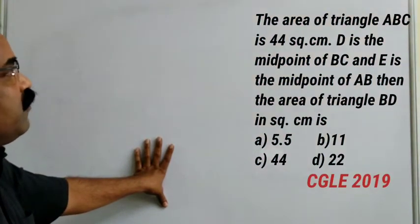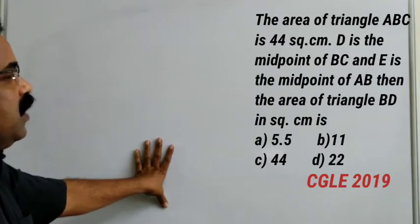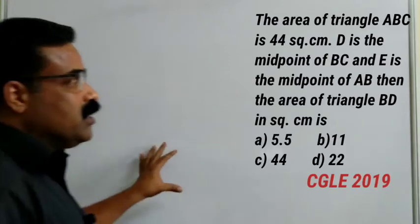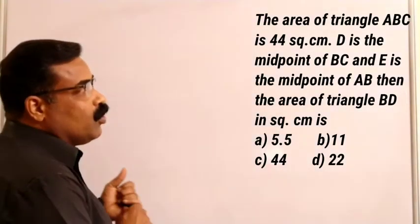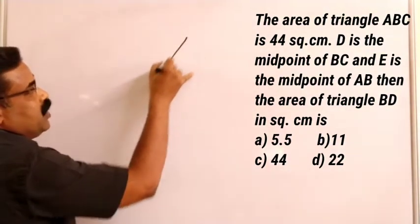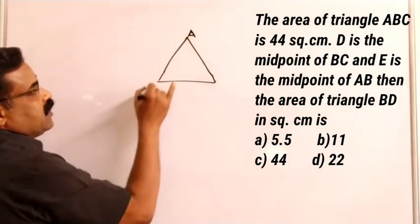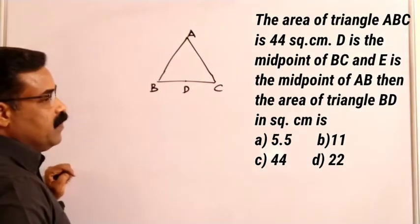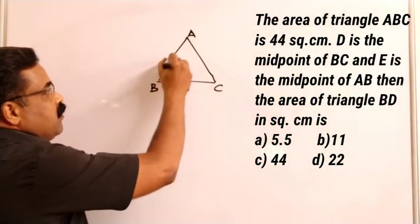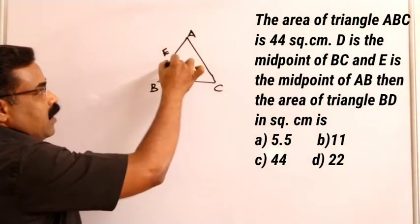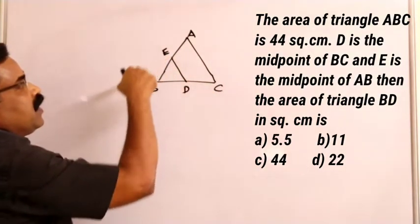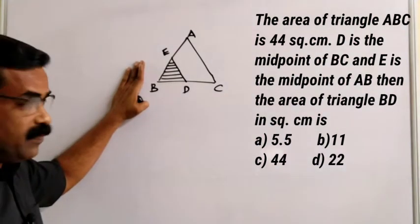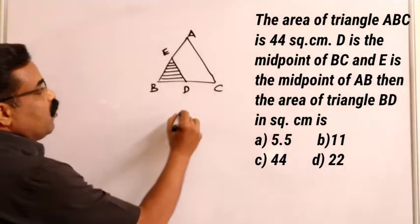The question: the area of triangle ABC is 44 cm². D is the midpoint of BC and E is the midpoint of AB. We need to find the area of triangle BDE. Let us draw triangle ABC as per the question. D is the midpoint of BC and E is the midpoint of AB. When we join them, we get triangle BDE. The total area of the triangle is 44 cm².